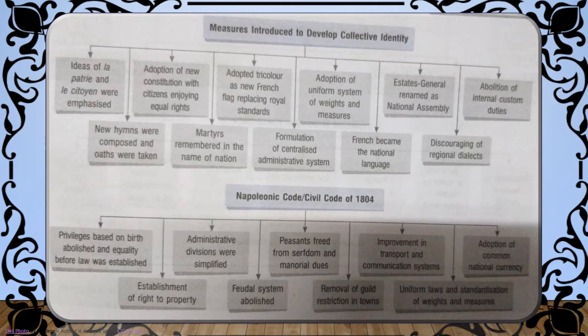Ideas of La Patrie and La Citoyenne were emphasized. Adoption of a new constitution with citizens enjoying equal rights. Adoption of the tricolour as the new French flag, replacing the royal standard. Adoption of uniform system of weights and measures. The Estates General was renamed as the National Assembly. Abolition of internal custom duties. New hymns were composed and oaths were taken in the name of the nation.